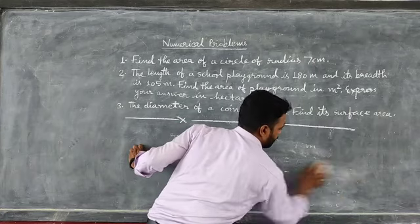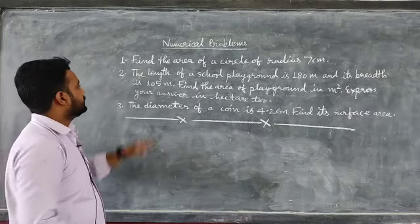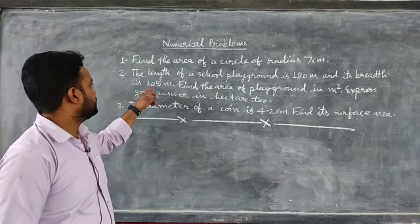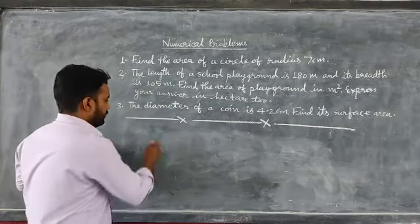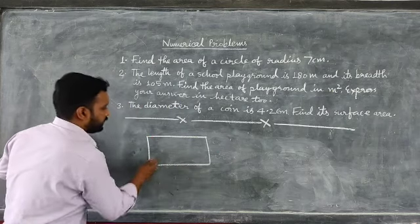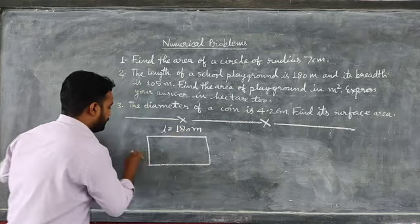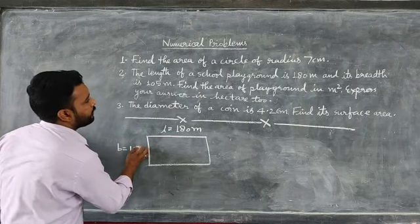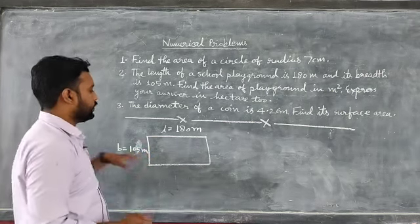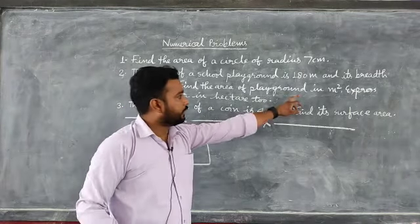Question number 2: The length of a rectangular playground is 180 meters and the breadth is 105 meters. Find the area of the playground in square meters.